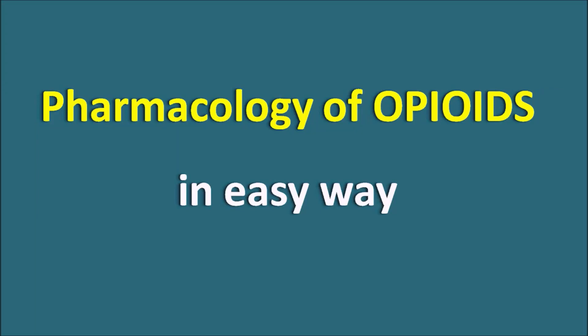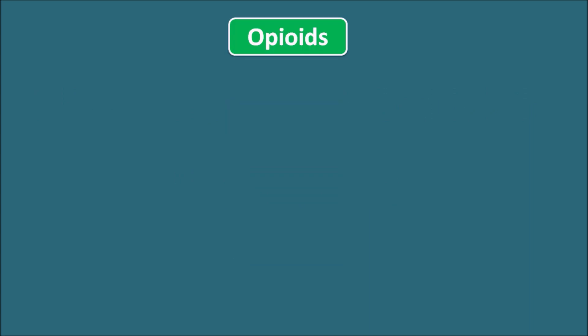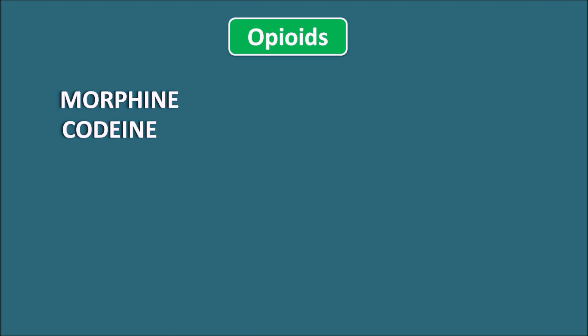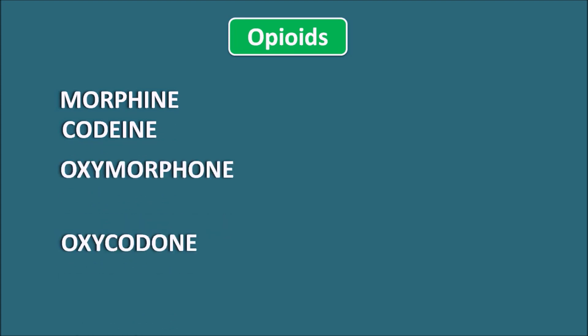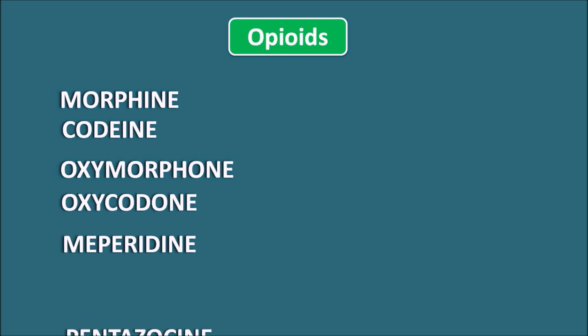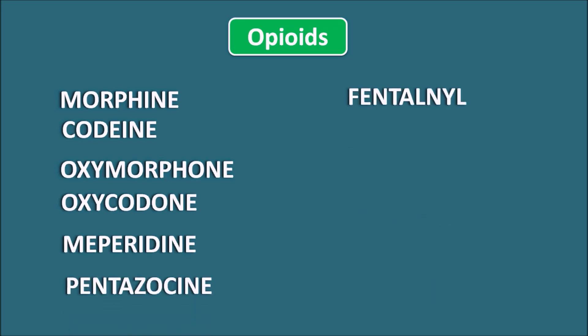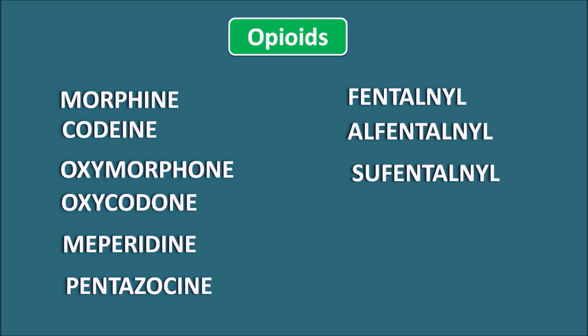Today in this video let us discuss about the pharmacology of opiates in an easy way. Many types of drugs are included in the category of opiates. For example, morphine, codeine, and we can also have the semi-synthetic and synthetic opiates like oxymorphone, oxycodone, meperidine, pentazocine. Similarly, other drugs like fentanyl, alfentanyl, sufentanil, which are the potent drugs within this opiate category, and diphenoxylate, methadone.